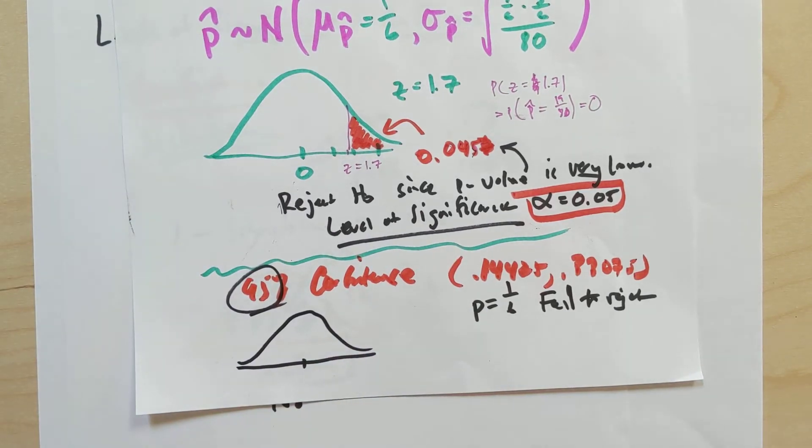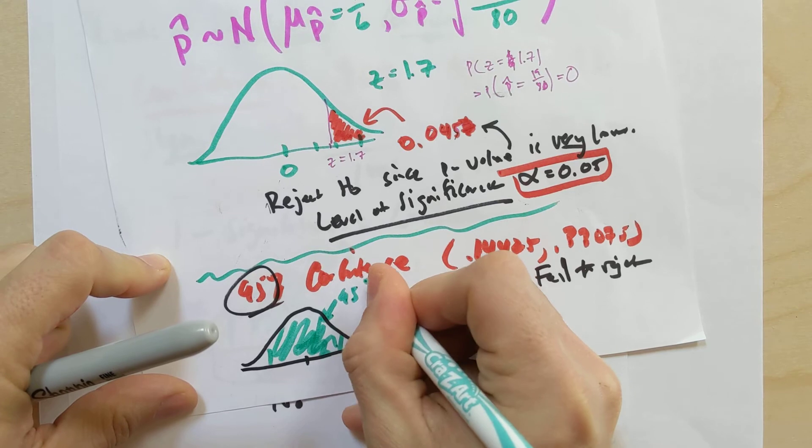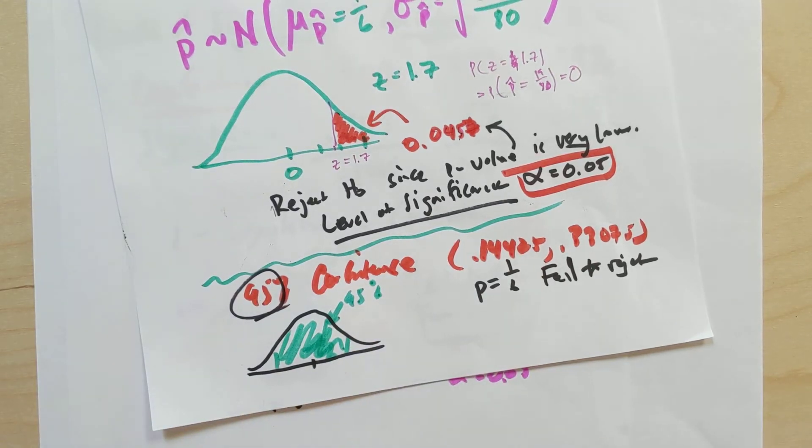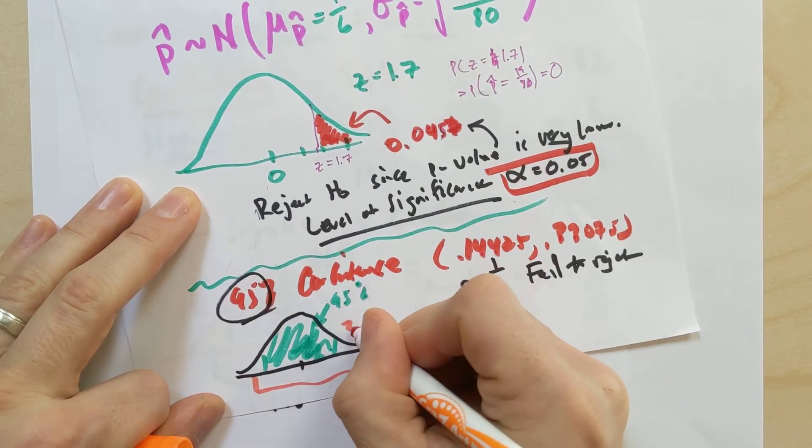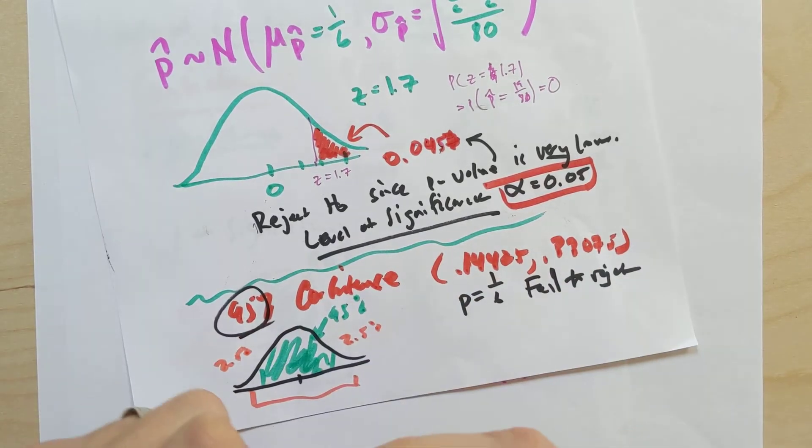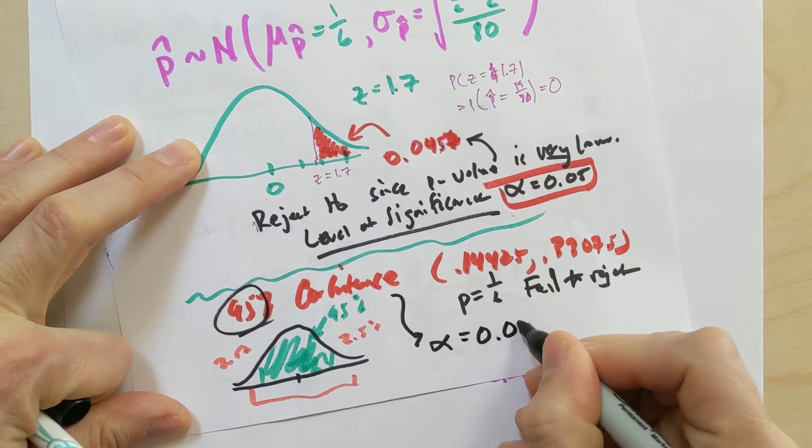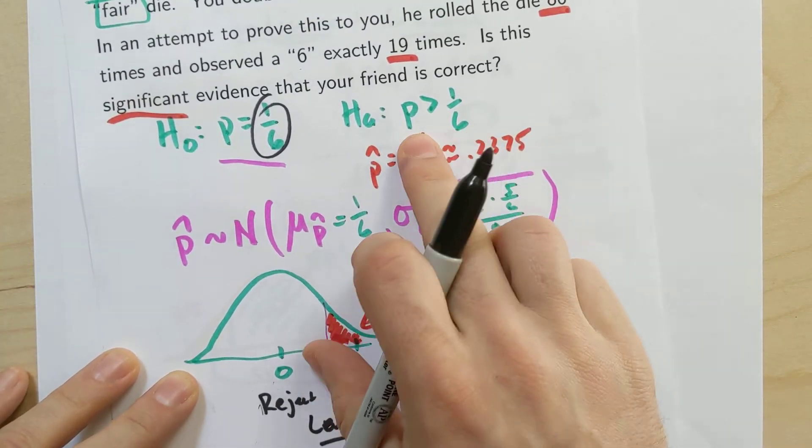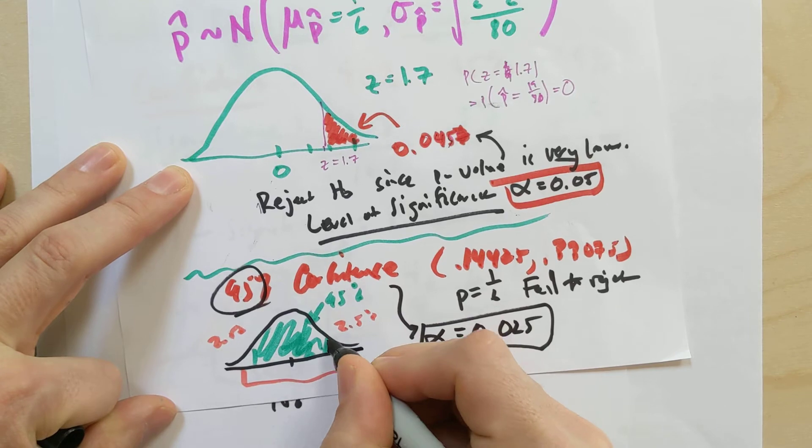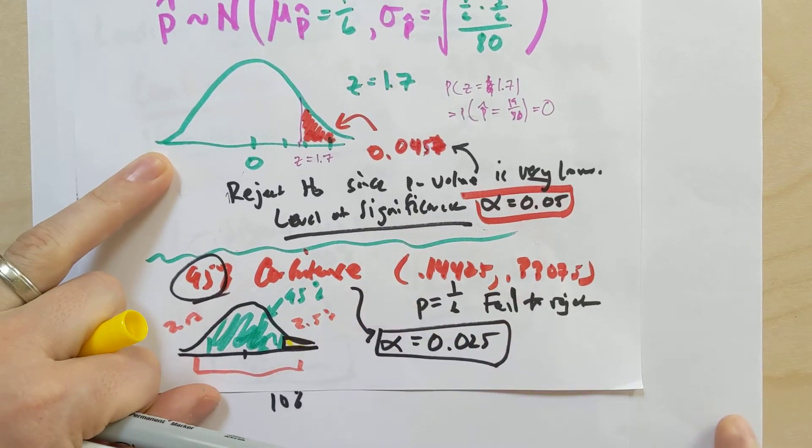Think about it. 95% requires that we shade in 95% here in the middle and thinking about the critical value to make our confidence interval. Well, what are the tails in a 95% confidence interval? Well, we know the sum of the two tails is 5%, right? And so each of these tails has to be 2.5%. So actually, this 95% confidence interval was the same thing as a level of significance where alpha is 0.025.